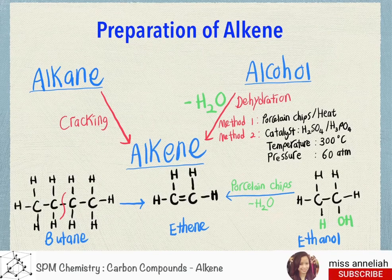So where do we get alkenes from? Very few alkenes are found in nature. Most of the alkenes used by the petrochemical industry are obtained by breaking up larger, less useful alkane molecules obtained from fractional distillation of crude oil.